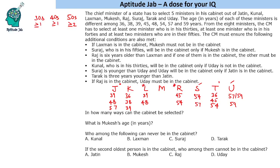It is given that there are 3 people in their 50s. Suraj and Uday are in their 50s for sure. If we consider Jatin and Tarak as 57 and 54, that would make 4 people in their 50s, which is not possible since there are only 3 ages above 50. So that case is eliminated.